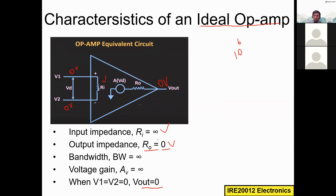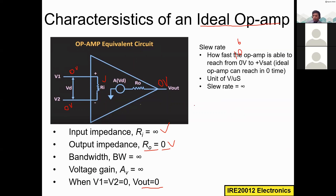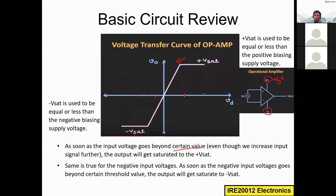Input impedance is very high and output impedance is very low — infinity and zero respectively. This is very useful in many circuit constructions. Two more parameters you should know: one is called slew rate. Slew rate means how fast the operational amplifier is able to reach from zero volts to plus V_sat.